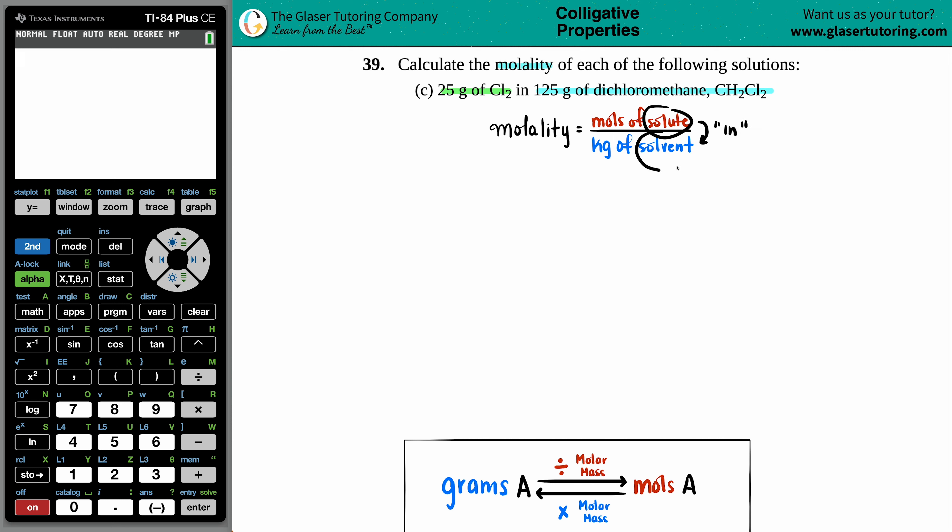So the solute goes in the solvent. And if we just look at the wording, they said that we had 25 grams of the Cl2 in this dichloromethane. So because of that, the Cl2 is the solute and the CH2Cl2 is the solvent.